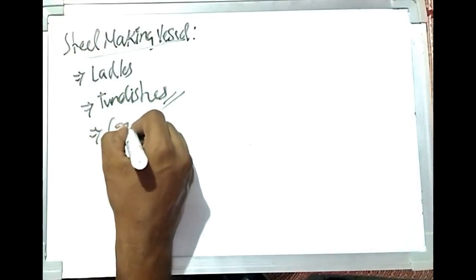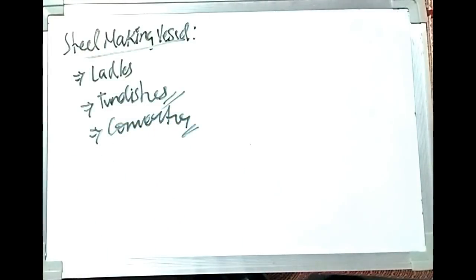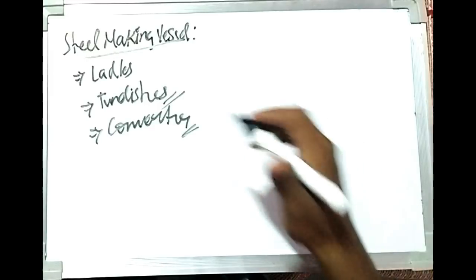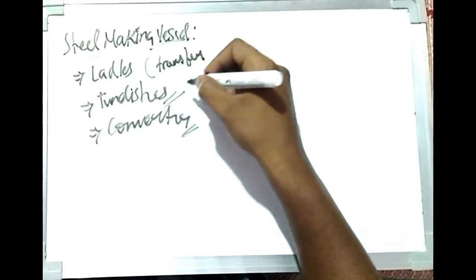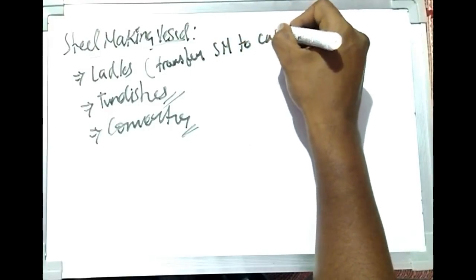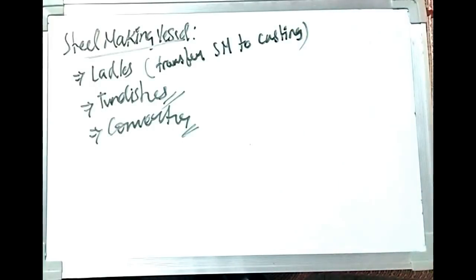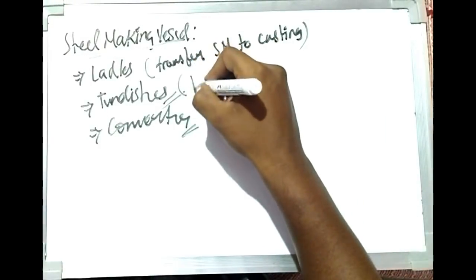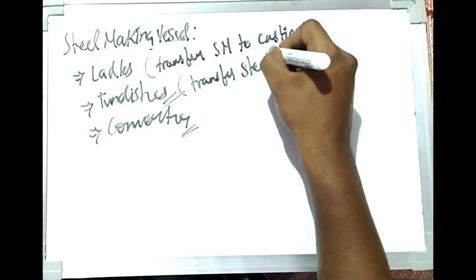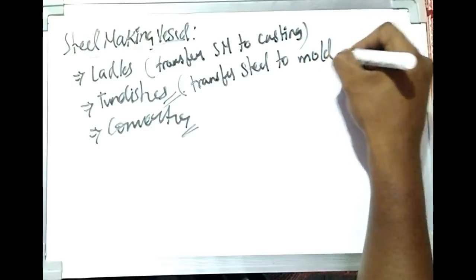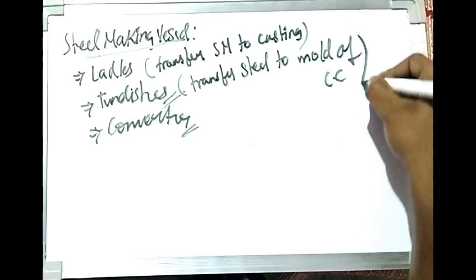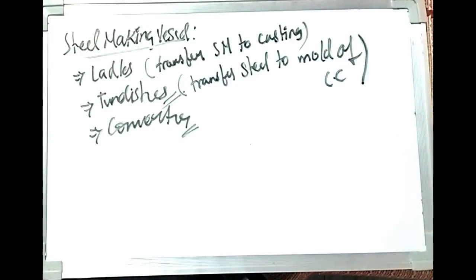A converter is where primary steel making takes place. A ladle is used to transfer molten steel from steel making to casting. A tundish transfers the steel to the mold of the continuous caster — it is a storage vessel above the mold that feeds steel into the continuous caster.